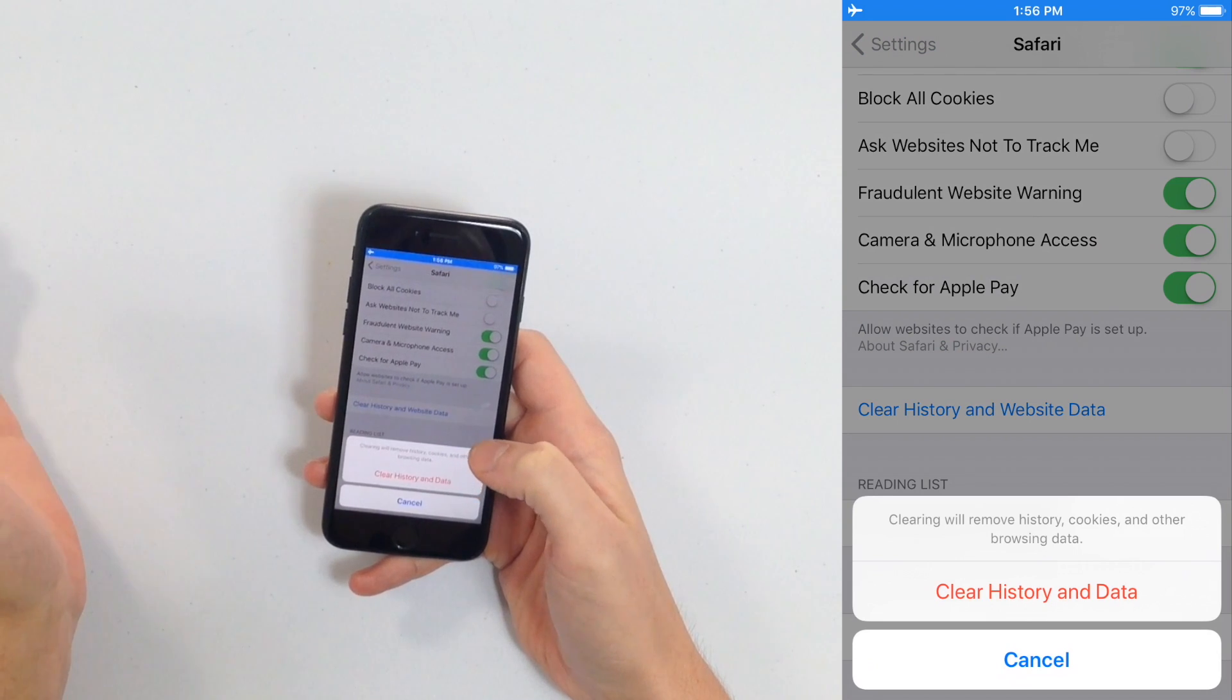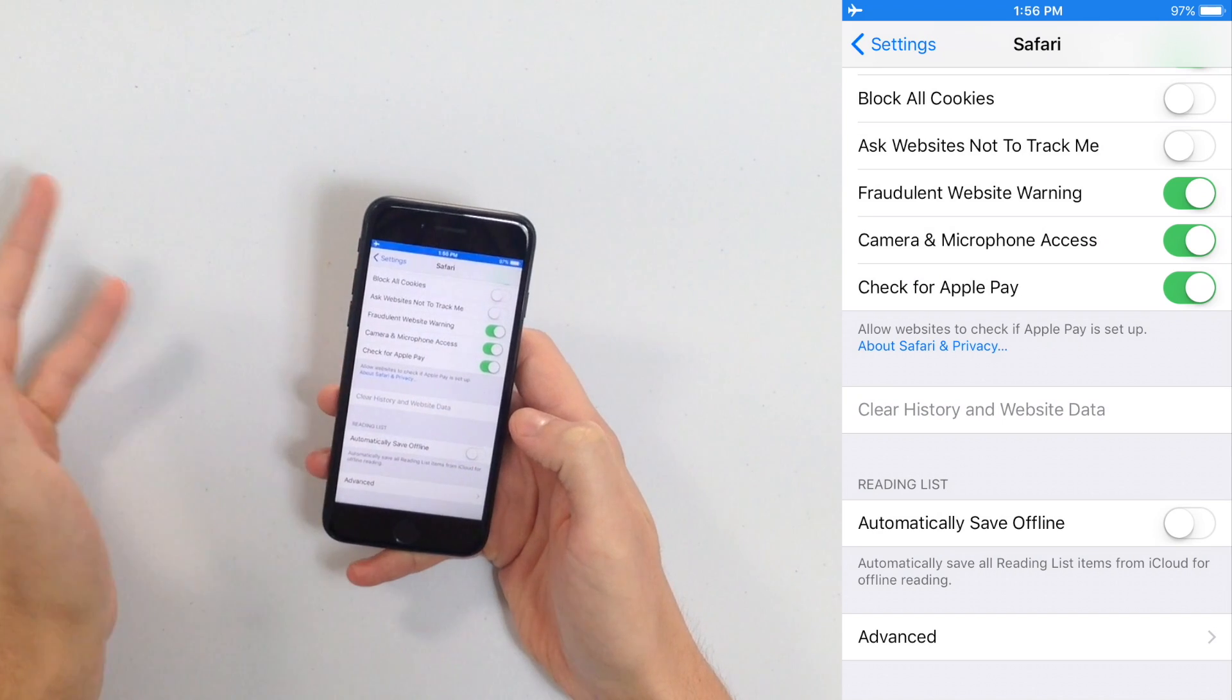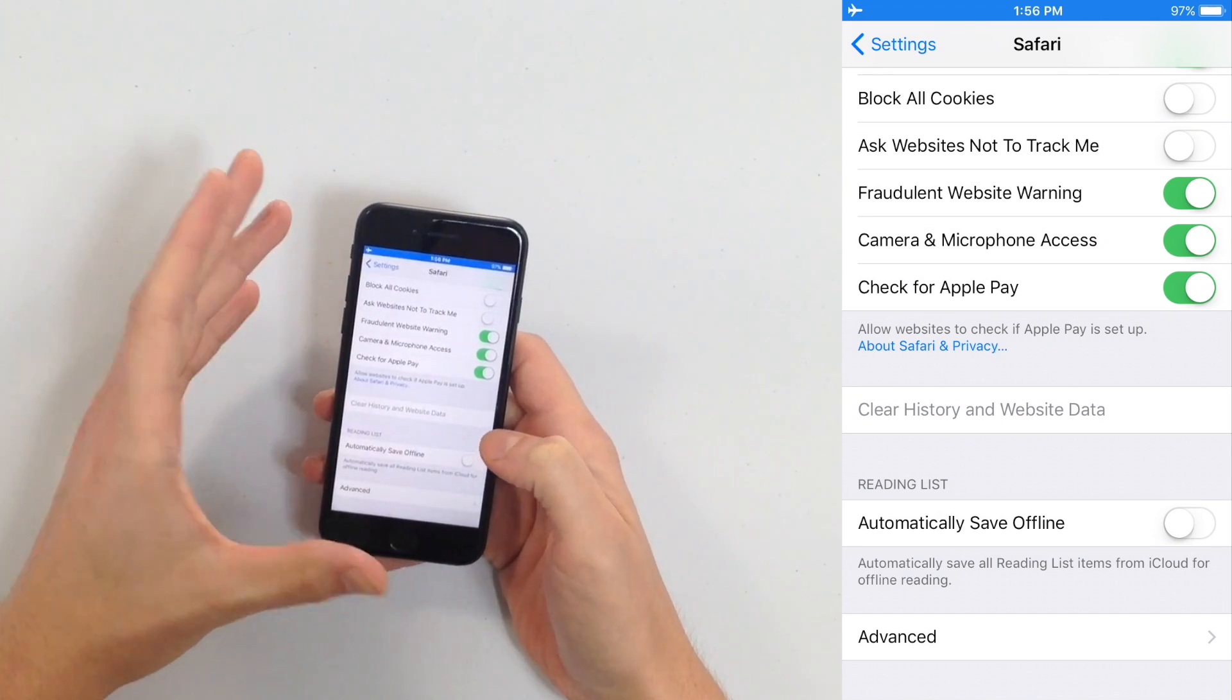So you're going to tap Clear History and Data and that's all it takes. Now you can see the Clear History and Website Data button is grayed out because I just did it and I can't do it again. So that is how you clear history and website data on your iPhone.